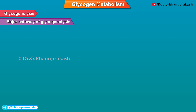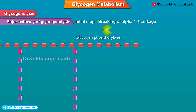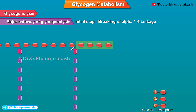Major pathway of glycogenolysis: The initial step is breaking of alpha-1,4 linkage. Glycogen phosphorylase is the enzyme that cleaves the alpha-1,4 linkage. This releases glucose-1-phosphate but not free glucose. Glycogen phosphorylase stops its action at least four glucose residues from a branch point to form limit dextrin.